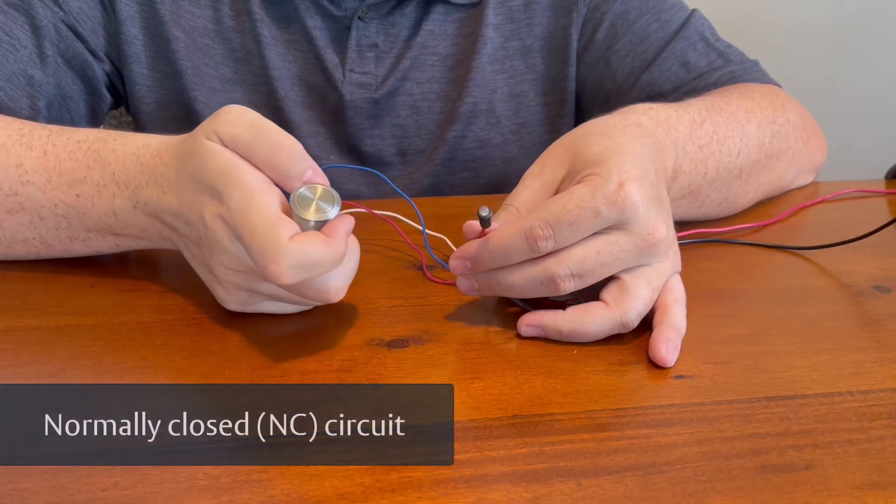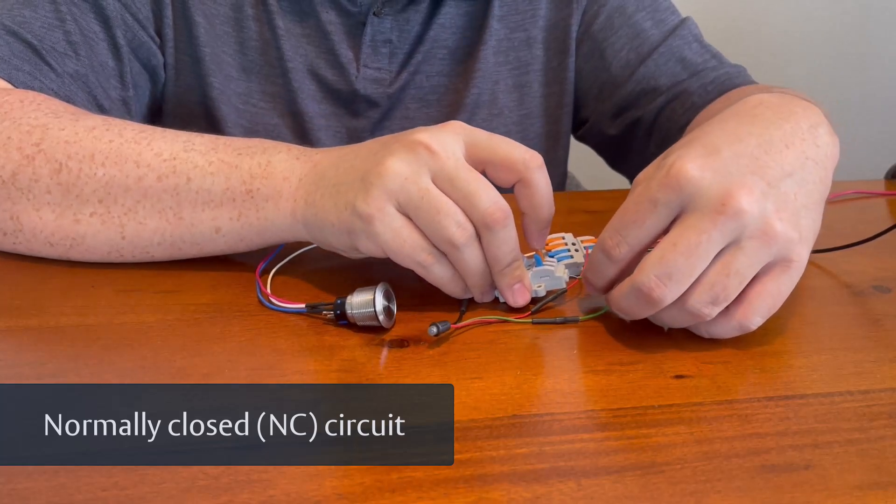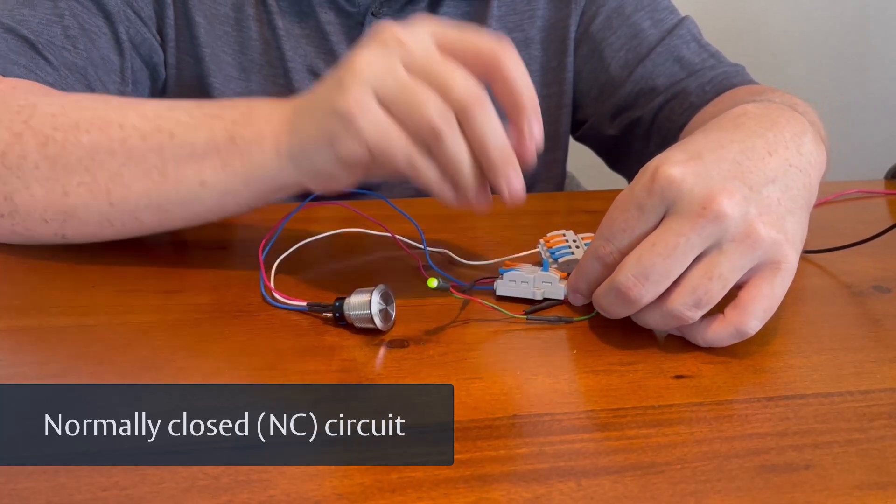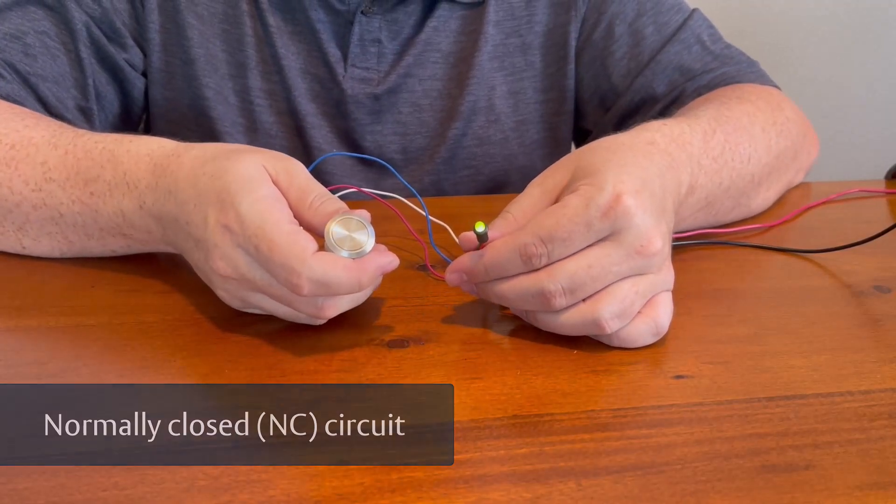Now, let's talk about normally closed circuits. A normally closed or NC circuit is the opposite. Here, the switch is in the on or closed position when it's at rest. The electrical path is complete, and current flows through the circuit.